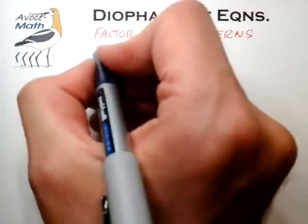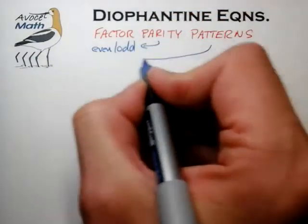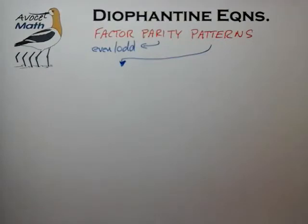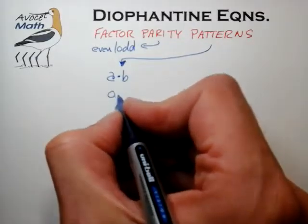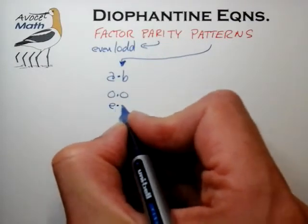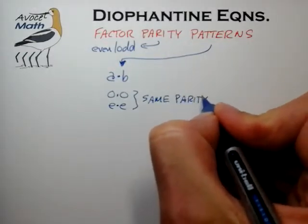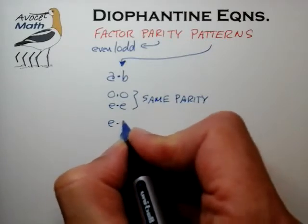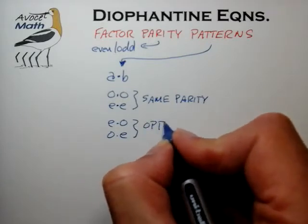When we talk about parity, we're talking about whether a number is even or odd. The patterns we refer to have to do with typically patterns involving two factors, say A times B. We often end up with very common factor patterns of parity involving either an odd times an odd, or an even times an even — and we describe that as same parity. Or we sometimes come across factor pairs which are even-odd or odd-even, and we describe those as opposite parity.